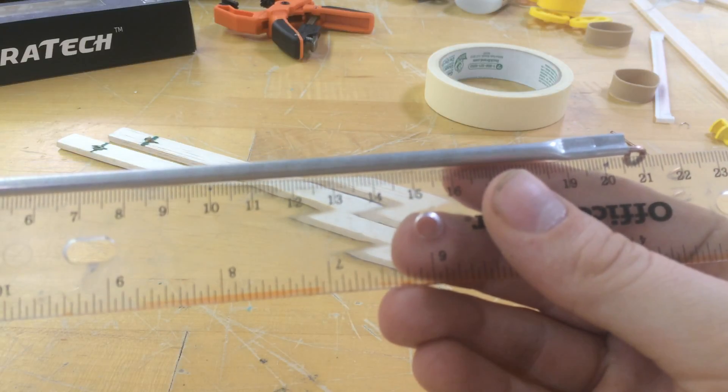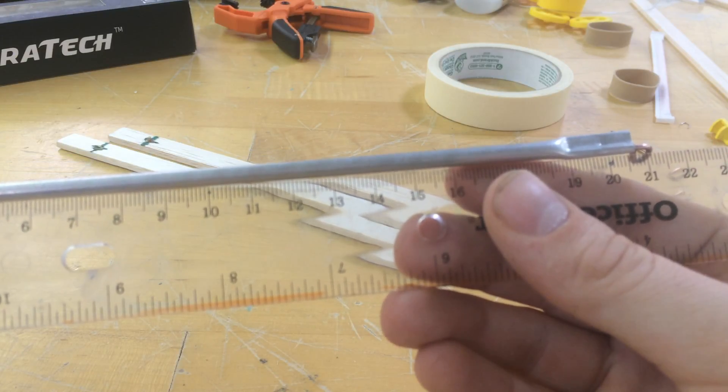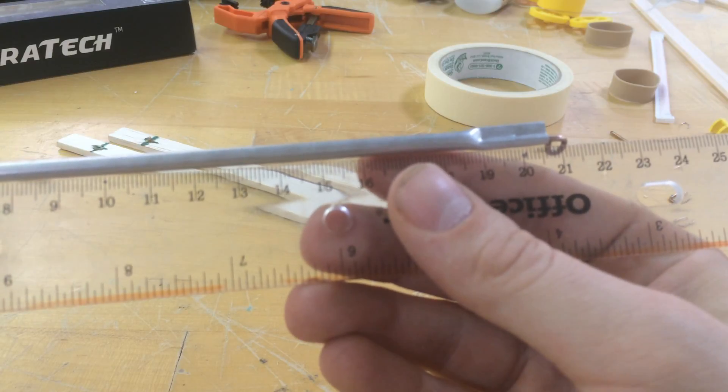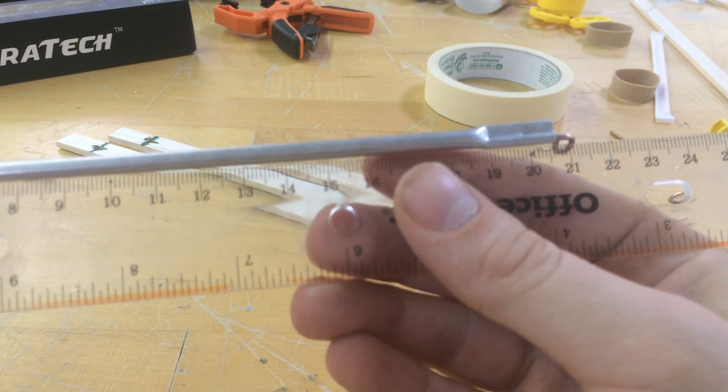So, if I line up zero on that center spring to that back hook, I have 21.2 cm.